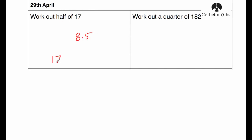You could also do it using the bus stop method — we could have done 17 divided by 2, and we would have got 2 into 1 doesn't go, remainder 1, 2 into 17 goes 8 times, remainder 1, and 2 into 10 goes 5.